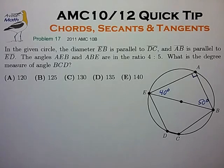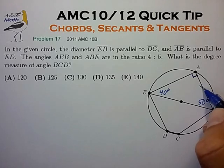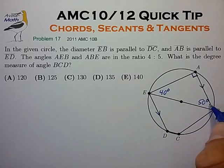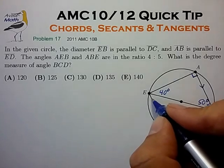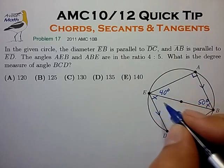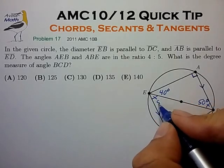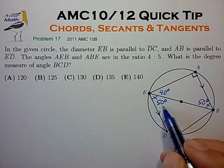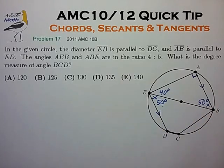So let's work out a few more details of this problem. We're told that line AB is parallel to ED, so we know that this angle is equal to this angle. So we have a 50 degree angle here, and that pretty much unlocks this problem.